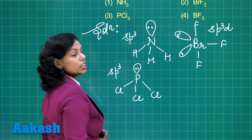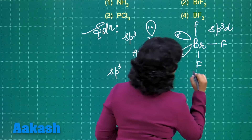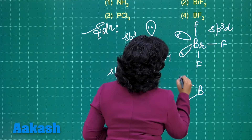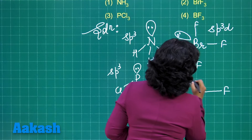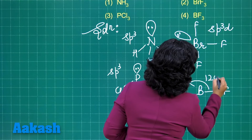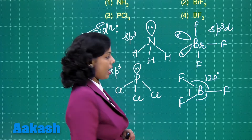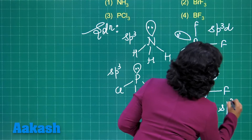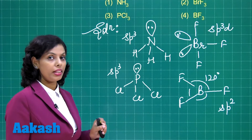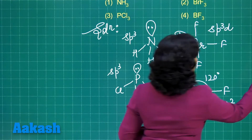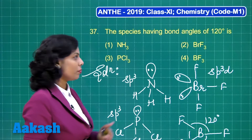BF3 is a triangular planar molecule with a bond angle of 120° and sp2 hybridization. There is no lone pair on boron, so there is no distortion. The correct answer is therefore option 4. Now let's take question number 38.